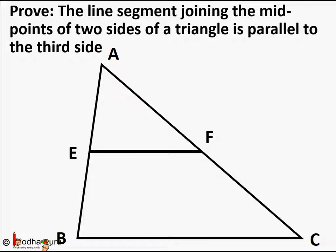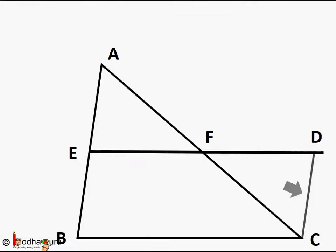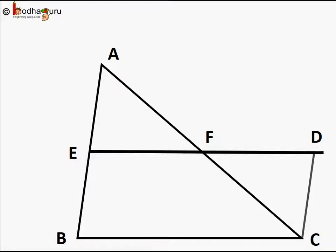We take a triangle ABC. We take the midpoint of side AB as point E, and the midpoint of side AC as point F. We join E and F, and we need to prove that EF is parallel to BC, the third side.